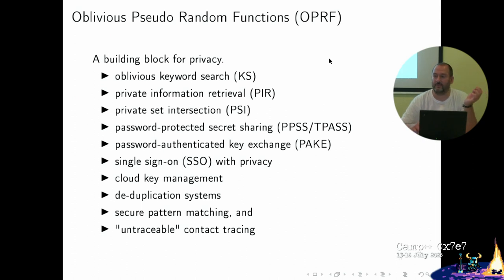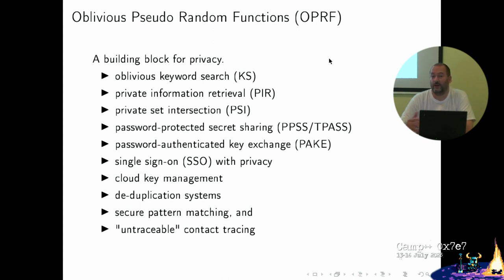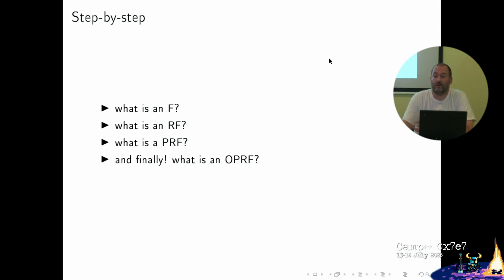And there's untraceable contact tracing, which was very useful during the pandemic. As you can see, all these examples have a very heavy privacy bias — they're quite exciting for applications where we want to build things that don't support surveillance capitalism. So let's have a look at what an OPRF is, going step by step: first we look at what an F is, then RF, PRF, and then OPRF.